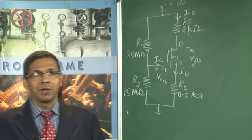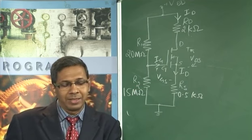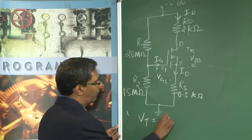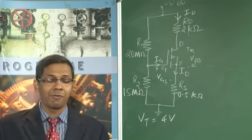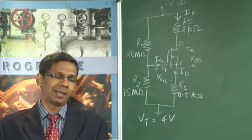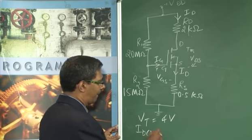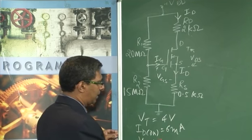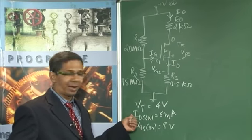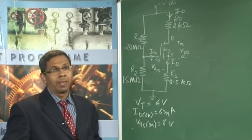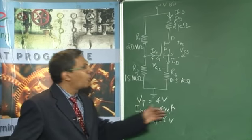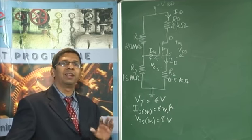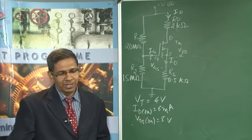The example gives: RD = 2 kΩ, RS = 0.5 kΩ (500 Ω), R2 = 15 MΩ, R1 = 20 MΩ. The MOSFET parameters are: VT = 4 volts, ID(on) = 6 mA at VGS(on) = 8 volts. The question asks us to find the Q point using the graphical method — plotting the transfer curve and DC load line — rather than solving equations directly.